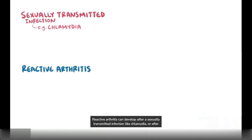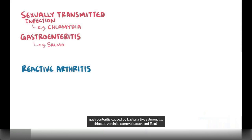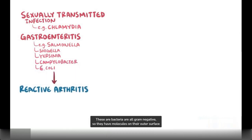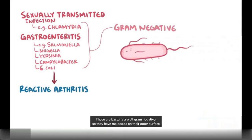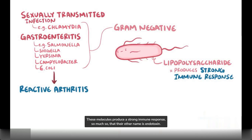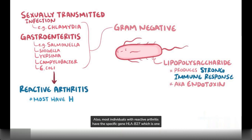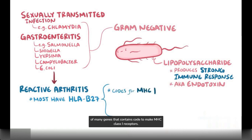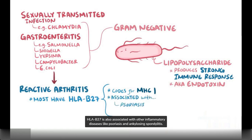Reactive arthritis can develop after a sexually transmitted infection, like chlamydia, or after gastroenteritis caused by bacteria like Salmonella, Shigella, Yersinia, Campylobacter, and E. coli. These bacteria are all gram-negative, so they have molecules on their outer surface called lipopolysaccharides, sometimes shortened to LPS. These LPS molecules produce a strong immune response, so much so that their other name is endotoxin. Also, most individuals with reactive arthritis have the specific gene HLA-B27, which is one of many genes that codes to make MHC class 1 receptors. HLA-B27 is also associated with other inflammatory diseases, like psoriasis and ankylosing spondylitis.